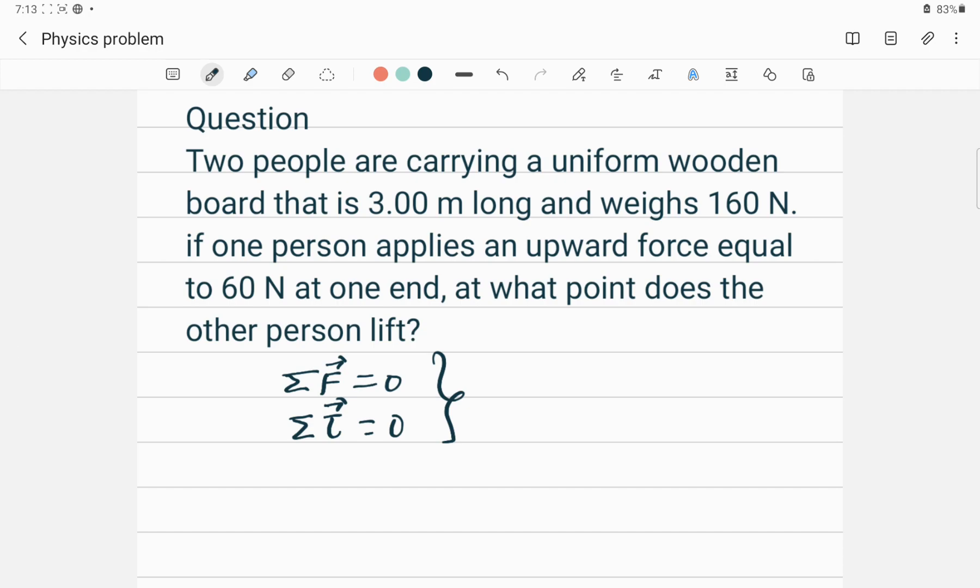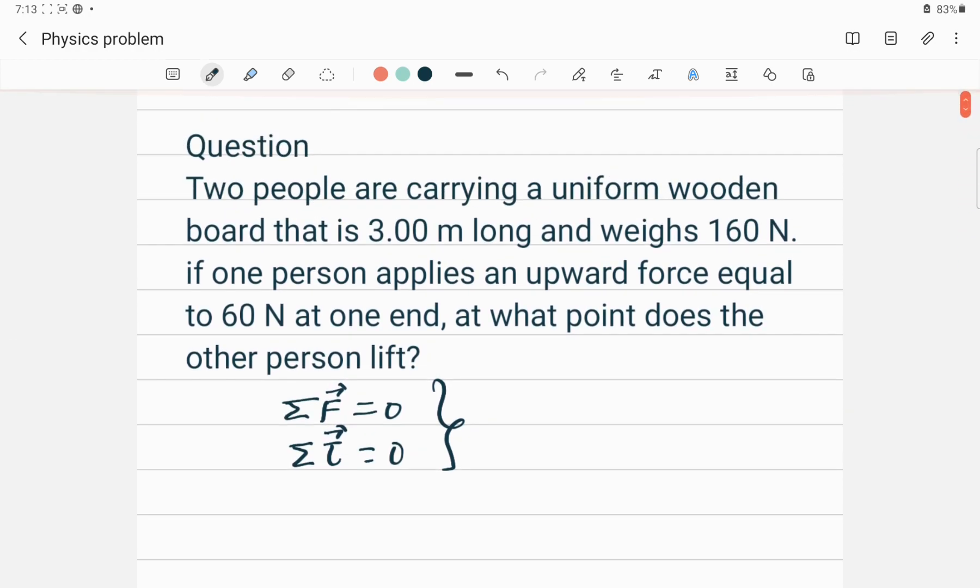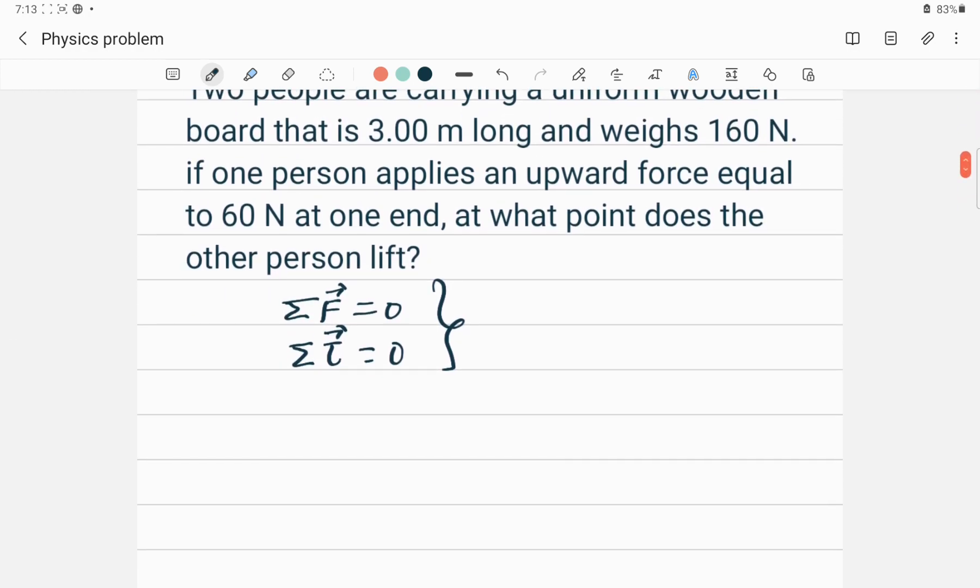Two people are carrying a uniform wooden board that is three meters long and weighs 160 Newton. If one person applies an upward force equal to 60 Newton at one end, at what point does the other person lift? So let me make a free-body diagram.